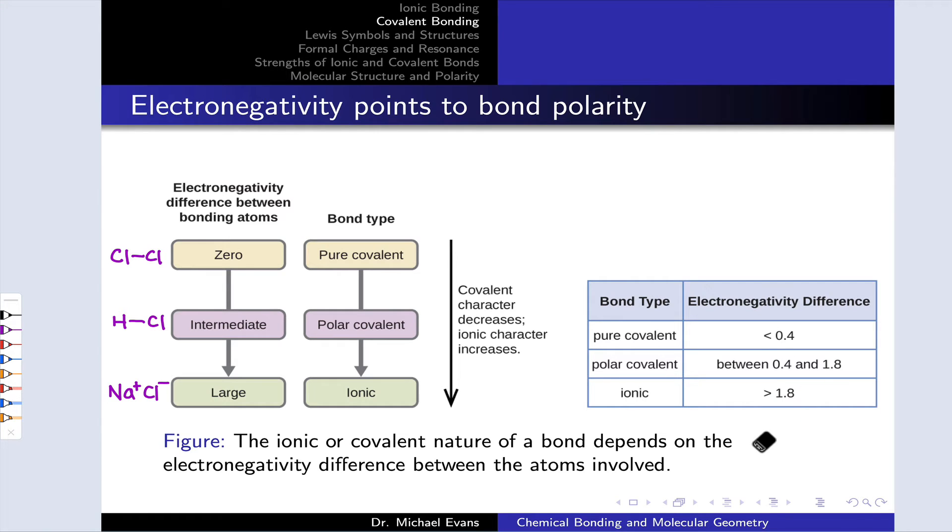Once you get above that cutoff of 0.4, somewhere between 0.4 and 1.8, again on the Pauling scale, you're dealing with a polar covalent bond, and HCl is a nice example of that. If you're talking about an electronegativity difference greater than 1.8, that's going to be getting into ionic bonding territory.